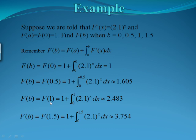If b equals 1, we're doing f of a, which was 1 because a was 0 — that's our starting point — plus the integral from 0 to 1 of 2.1 to the x dx. You'll put this part of the integral into your calculator and add 1, so f of 1 is 2.483. When b equals 1.5, we're looking at f of 0, which is 1, plus the integral from 0 to 1.5 of 2.1 to the x dx — put the integral in your calculator and add 1 — and we get that f of 1.5 is 3.754. So if you're trying to solve for f of b numerically, you're just going to do f of a, which will be given, plus the integral from a to b of f prime of x dx.